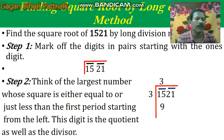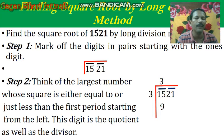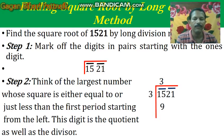Then you will go to step number two. Think of the largest number whose square is either equal to or just less than the first period starting from the left. Your first period from the left is 15. I will take 3, because 3 times 3 is 9.